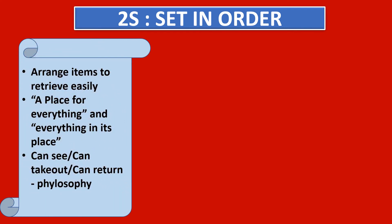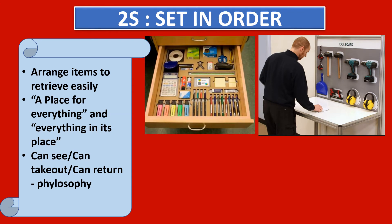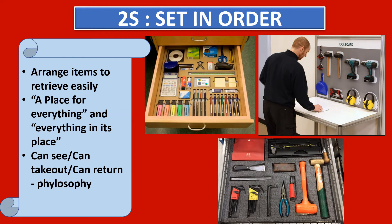Now let us see 2S, that is set in order. Arrange items so that they are easy to find and readily retrieved. A place for everything and everything in its place. Apply the 'can see, can take out, and can return' philosophy. Here you can see a photograph — a shadow board is there with some items kept on it. Mr. John is taking one hammer from that board and writing in the logbook that he has taken it. Now Mr. Harry will come, he will not find that hammer on the board, but after seeing the logbook he will understand that Mr. John has taken it.